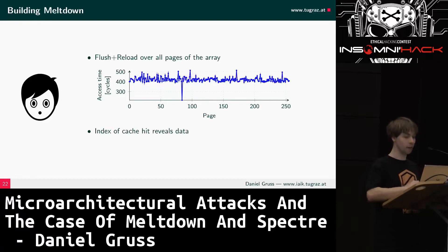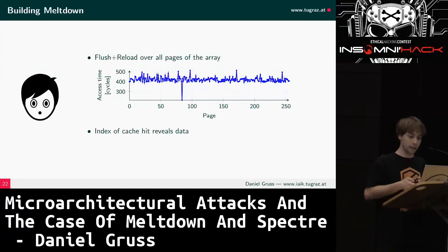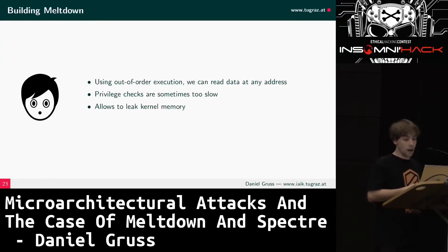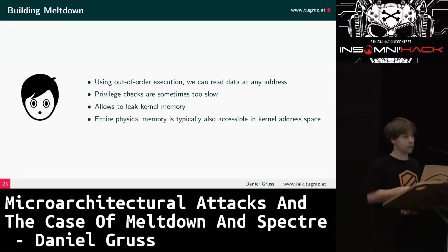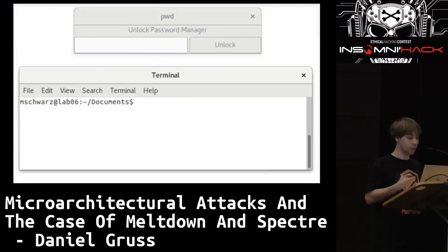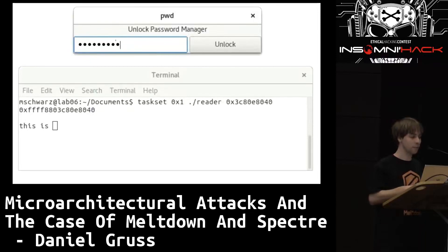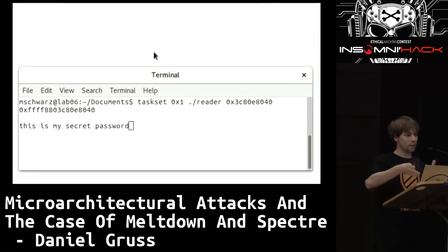Meltdown is really simple to understand and really simple to implement — which makes it a huge threat because it's easy for attackers to reproduce. The permission check is not fast enough in some cases. We can read arbitrary data from the kernel, and in the kernel memory there's usually a mapping of most or all of the physical memory. You can write a small program, pass a physical address — like the address of a password buffer — and live-read the string the user types in.